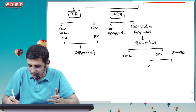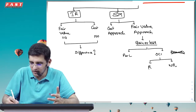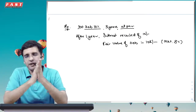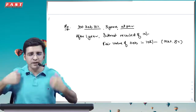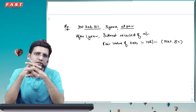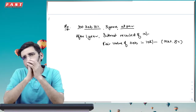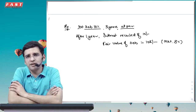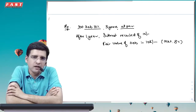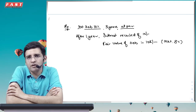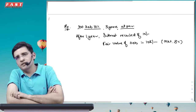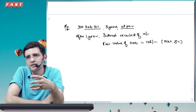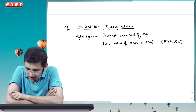Within P&L or OCI, we have further options. OCI can be reclassifiable — meaning when you eventually sell the asset, the OCI balance gets reclassified back to P&L. Or OCI can be non-reclassifiable — when you sell, the OCI balance is transferred directly to reserves in the statement of changes in equity. There is a separate revision video available on this concept of reclassifiable versus non-reclassifiable OCI.